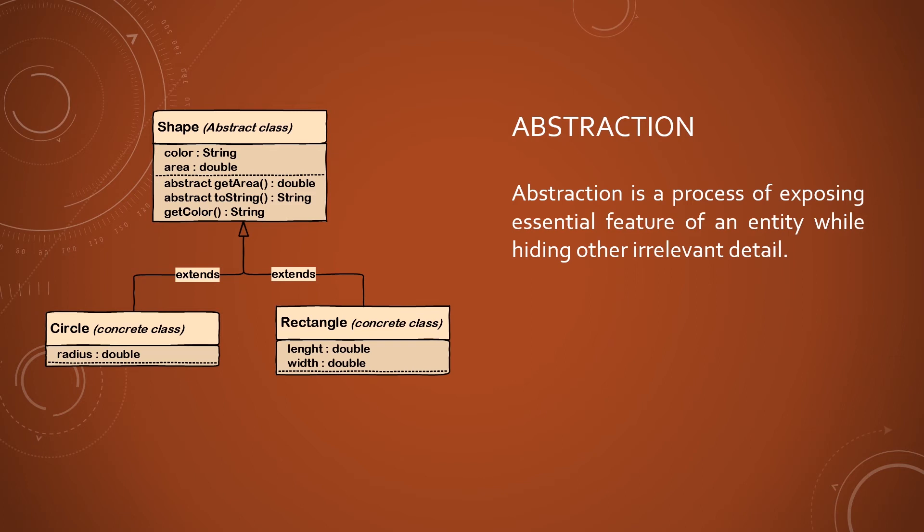Abstraction focuses on the important aspects of the object under study, ignoring the irrelevant aspects that can distract attention. It also allows selecting those members of a class that are relevant to the problem to be solved. The same object of study can be analyzed from various aspects or points of view, which can generate a large number of features and actions.